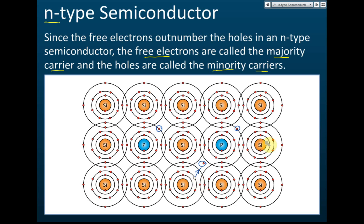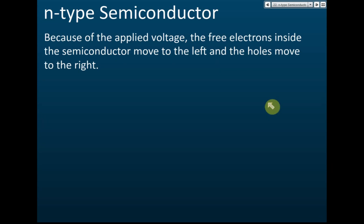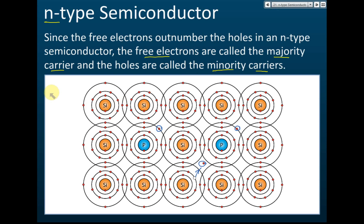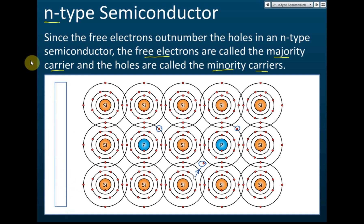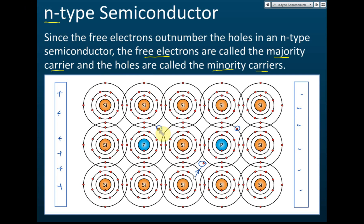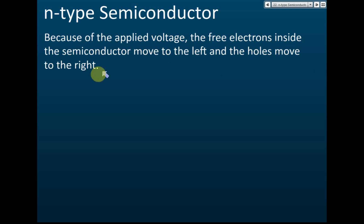What does 'carrier' mean? Carrier means charge carrier — the electrons and the hole are charge carriers. The electron carries negative charge and the hole carries positive charge. Because of the applied voltage, the free electrons inside the semiconductor move to the left and the holes move to the right. If we have a plate with a positive charge on the left and another plate with a negative charge on the right, the electrons move toward the positive plate and the holes move toward the negative plate.